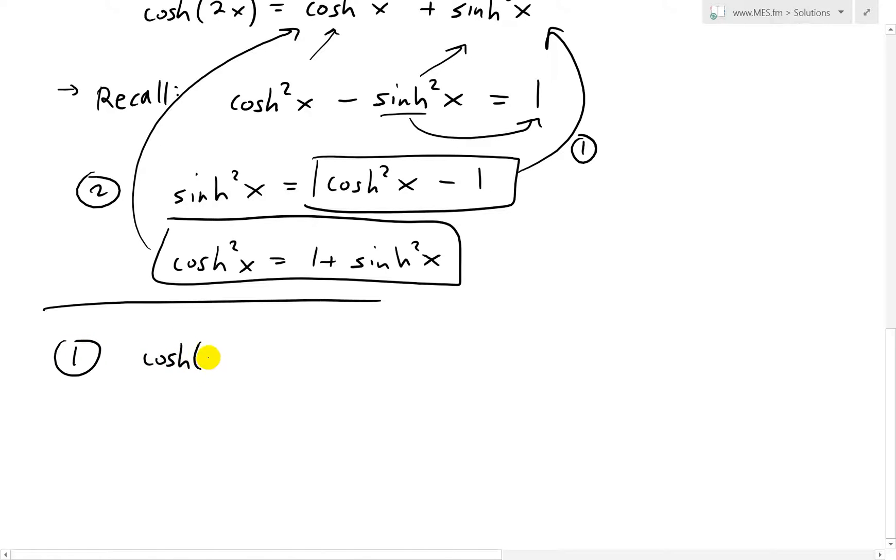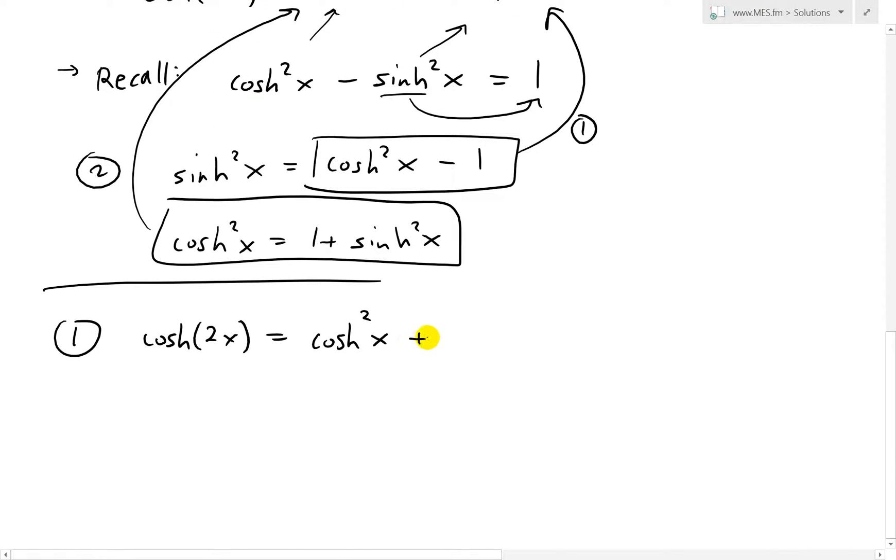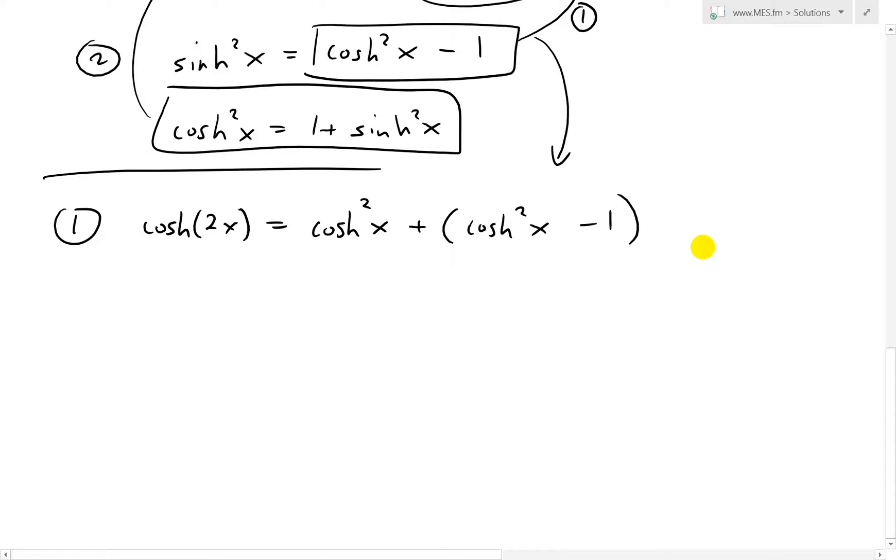So what we have is this formula right here for number 1, cosh(2x) equals to, and I'll just write this as cosh²x and then plus sinh, which is now this one over there, so plus cosh²x minus 1. So that's what we're throwing it over there. Now this just adds up to, well this just becomes 2cosh²x minus 1 like that, and this is our corollary number 1.